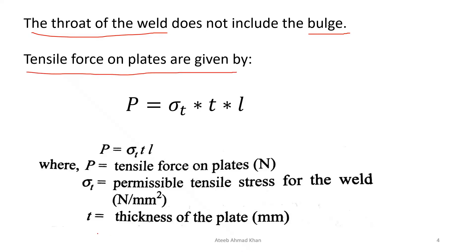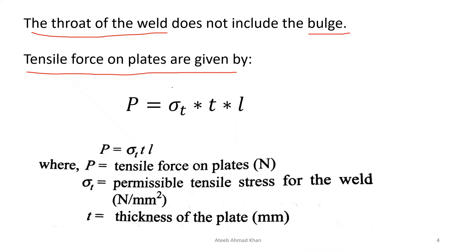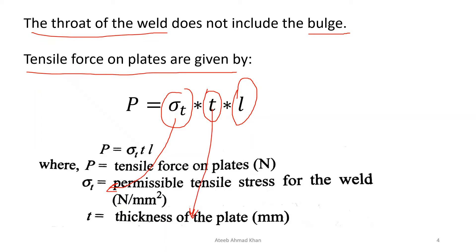From the stress equation, σT equals P divided by area, you can rearrange to calculate the tensile force: P equals σT (the allowable tensile stress in the weld) multiplied by T (the thickness of the plate) multiplied by L (the length of the weld). σT is the permissible tensile stress in newton per mm², T is the thickness of the plate since the weld throat equals the plate thickness, and L is the length of the weld.